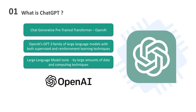Chatbots like GPT are powered by large amounts of data and computing techniques to make predictions to string words together in a meaningful way. They not only tap into a vast amount of vocabulary and information, but also understand words in context. This helps them mimic speech patterns while dispatching encyclopedic knowledge. Other tech companies like Google and Meta have developed their own large language model tools which use programs that take in human prompts and devise sophisticated responses.